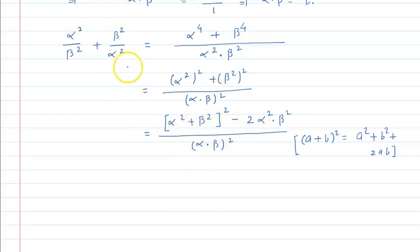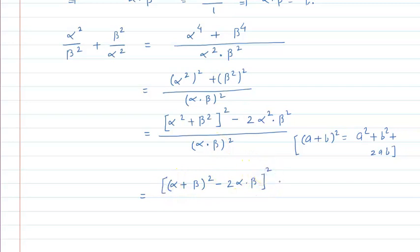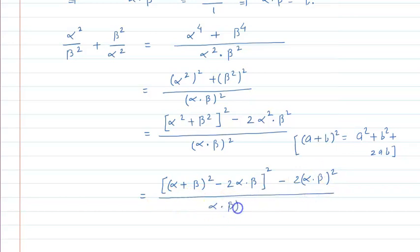यह अभी भी alpha + beta और alpha × beta के form में नहीं है, तो again उसी identity के according इसे लिखेंगे. α² + β² = (α + β)² - 2αβ. तो यह बन जाएगा: [(α + β)² - 2αβ]² - 2(αβ)², divided by (αβ)².